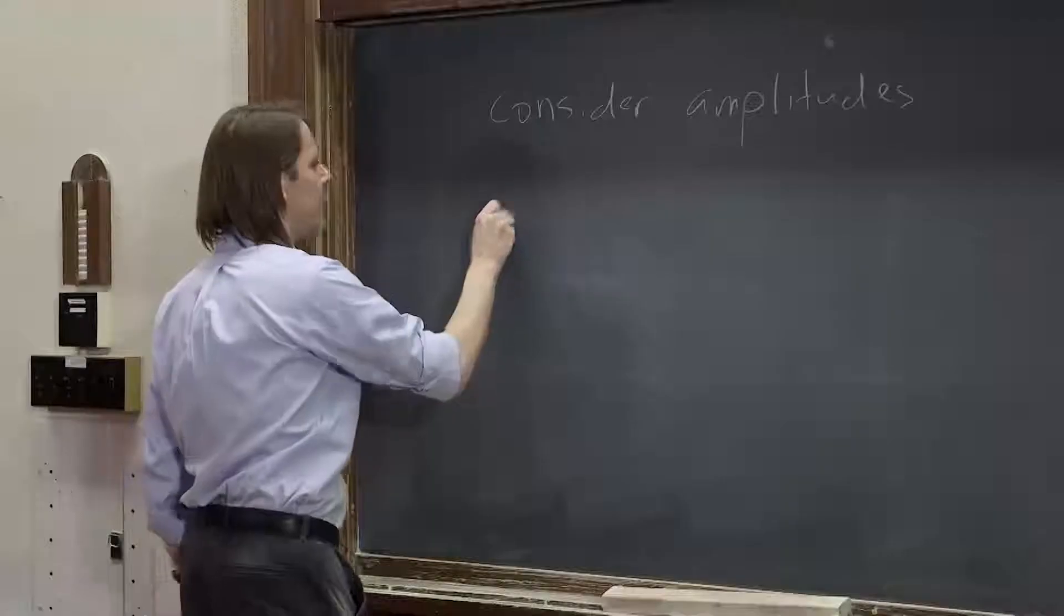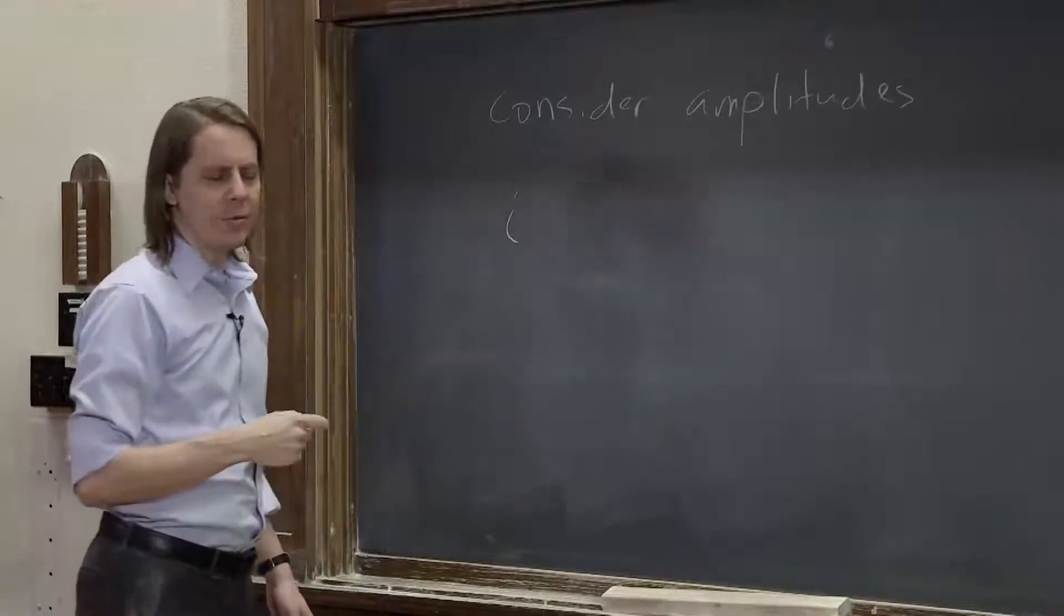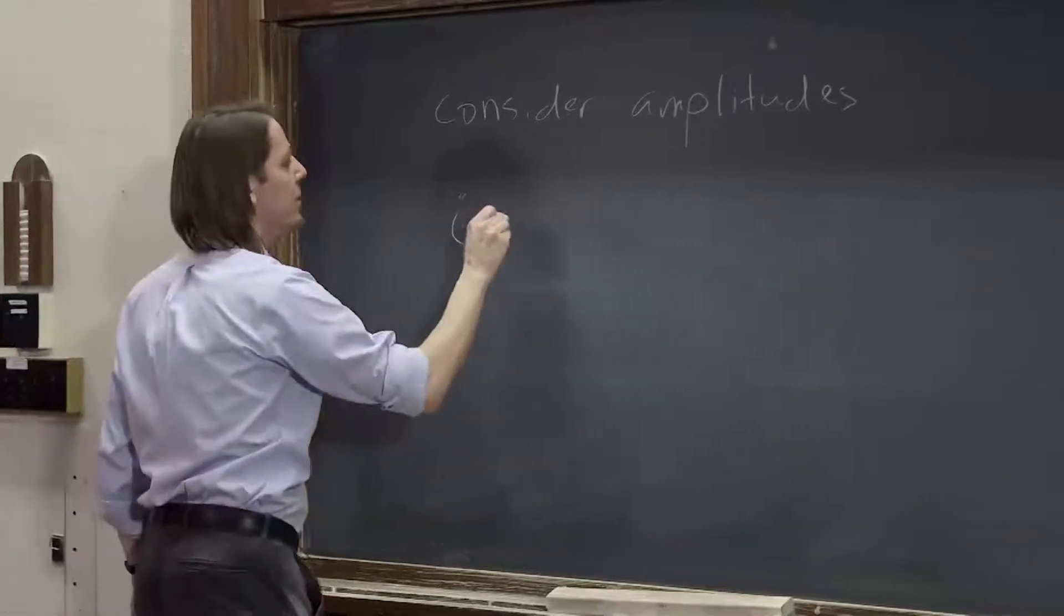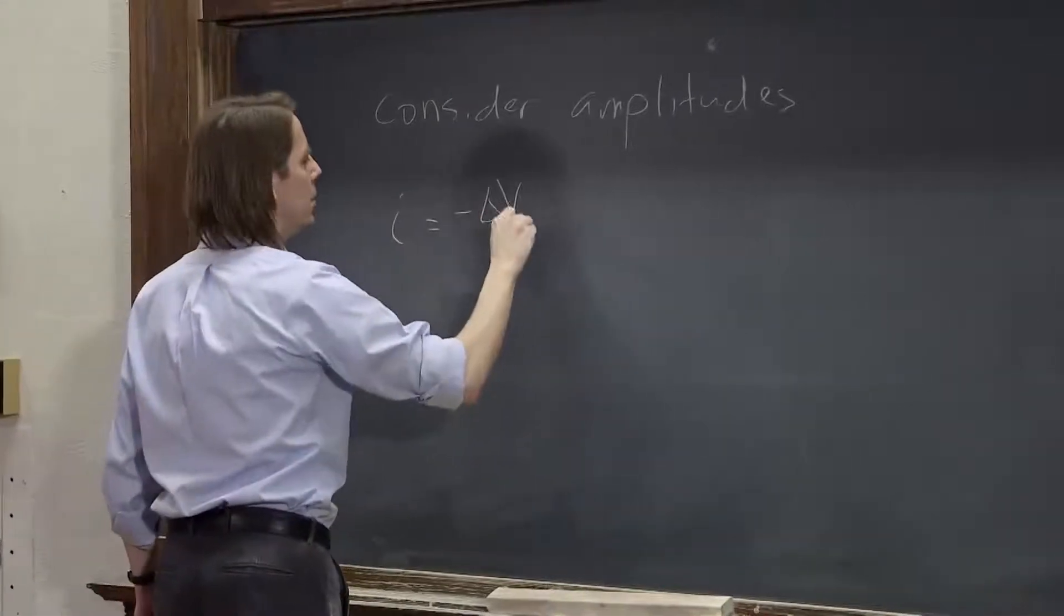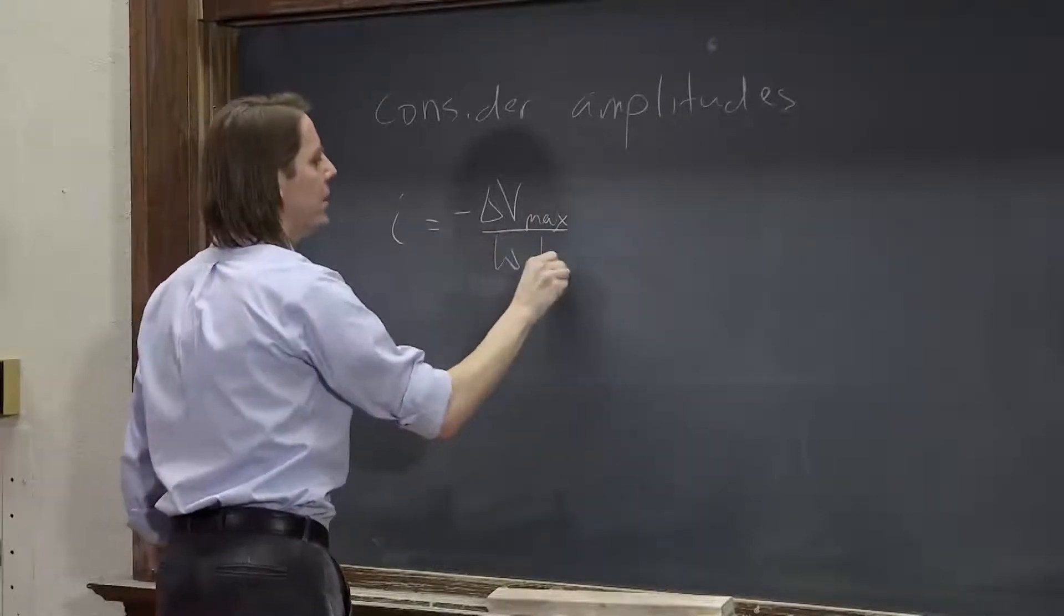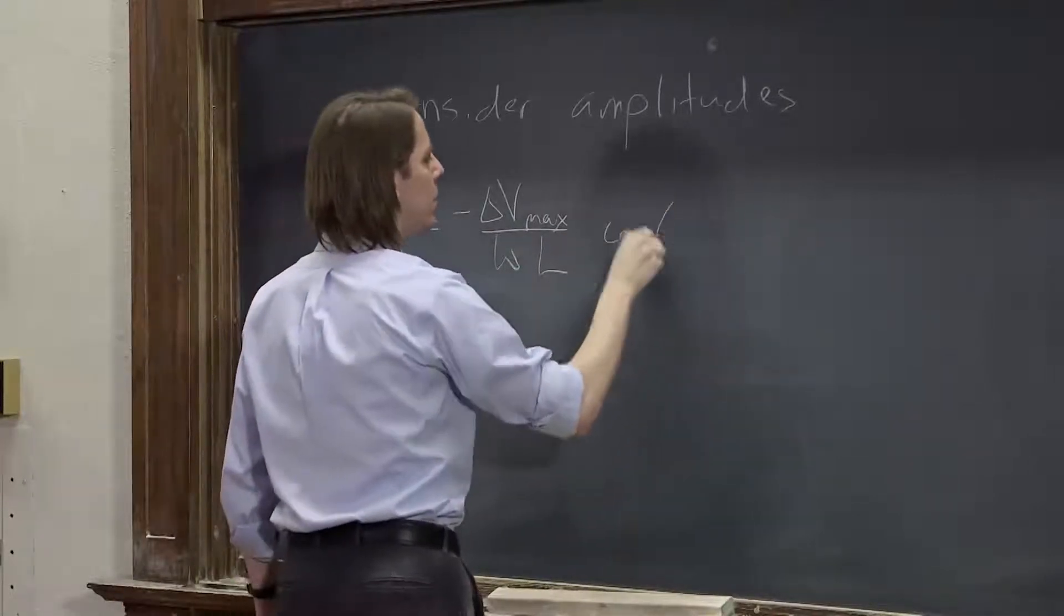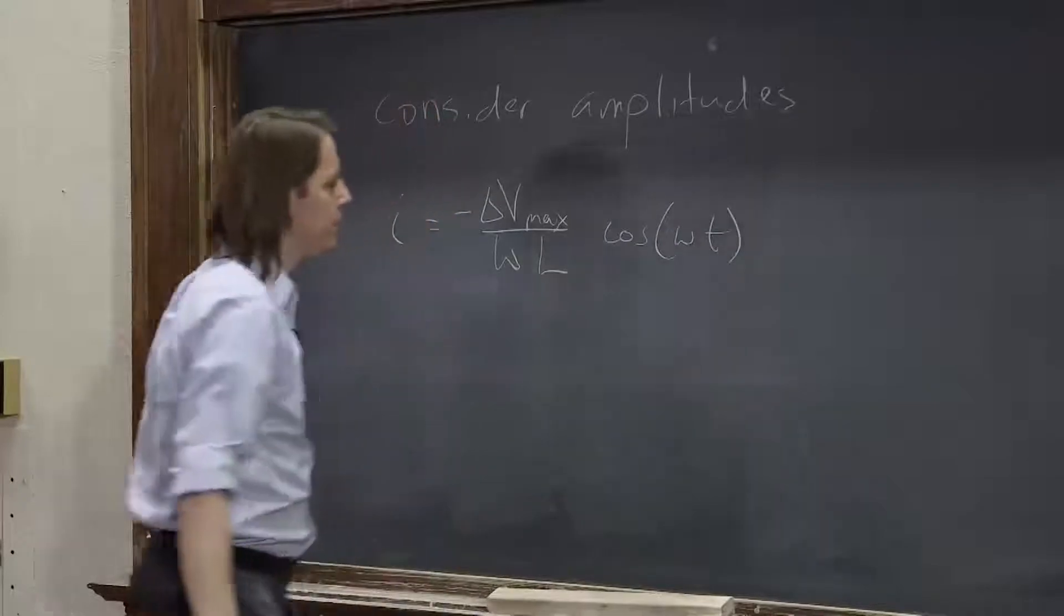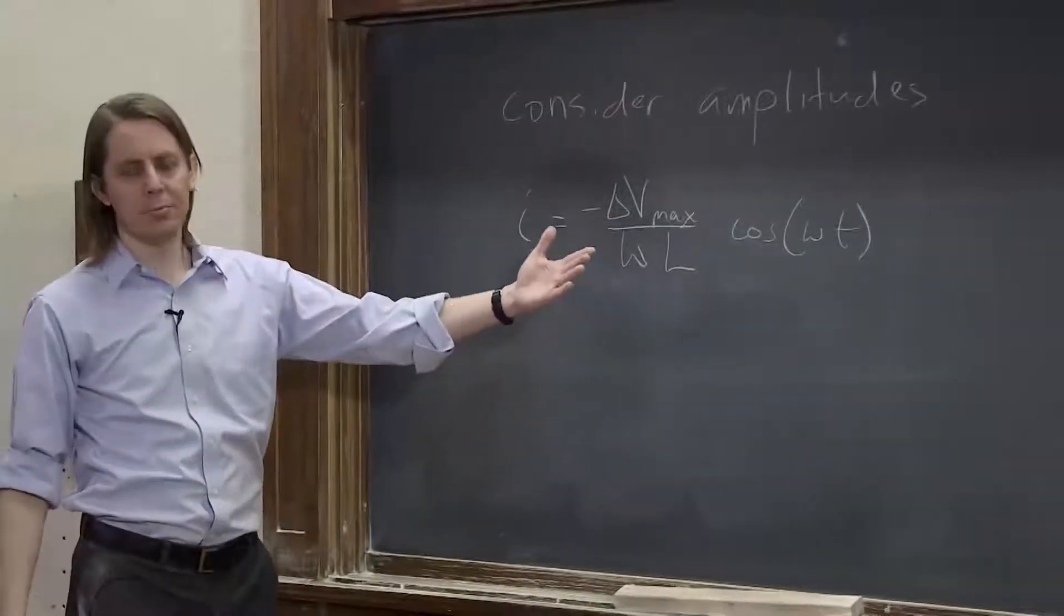So if we go back, our current in the AC-driven inductor was equal to minus delta Vmax over omega L cosine omega T. And that's just a simple sinusoid.